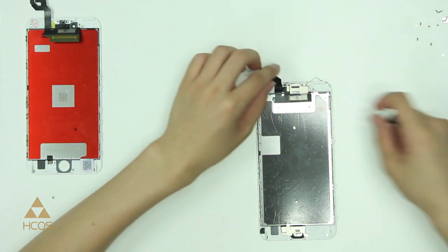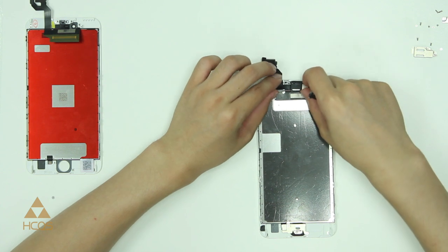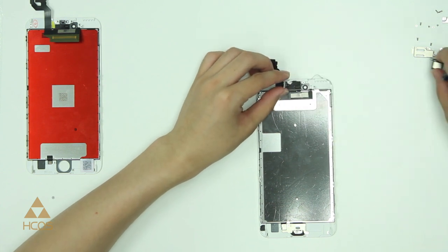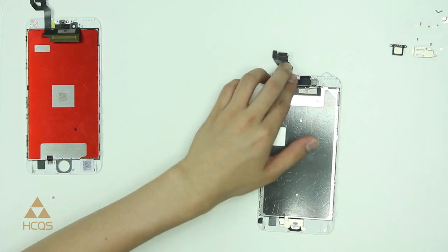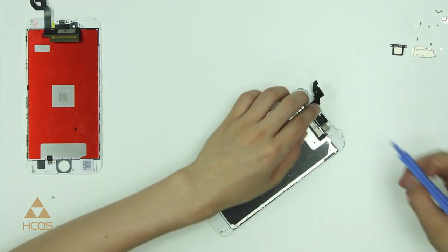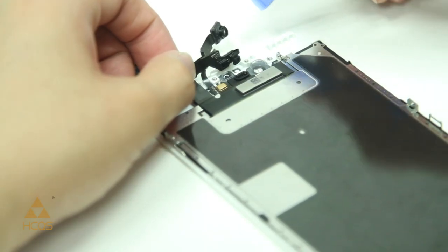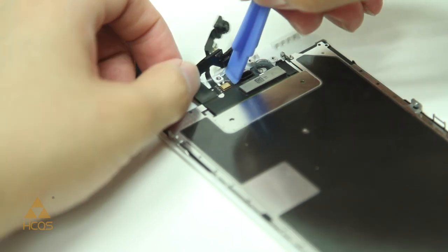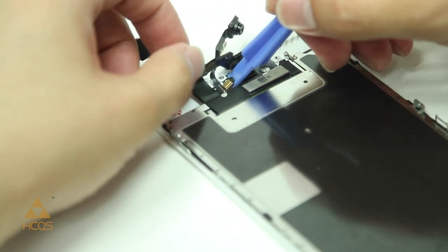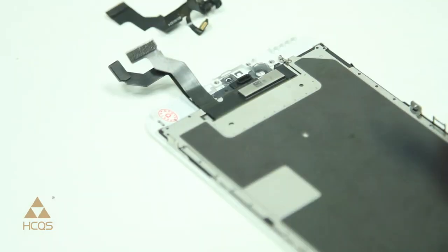After you have the three screws removed you can lift off this metal piece and now we're going to fold the front facing camera over to the left hand side in order to expose the earpiece speaker which you can see he just removed and set off to the side. Then what we'll need to do is pry underneath the microphone that is attached to the lens so very carefully get underneath this piece of flexible cable with your pry tool and you can remove the entire front facing camera assembly.